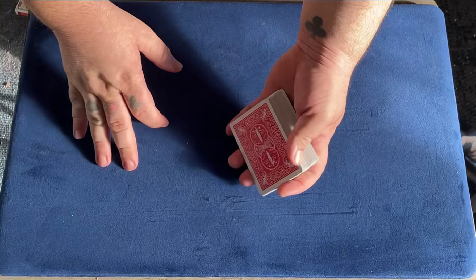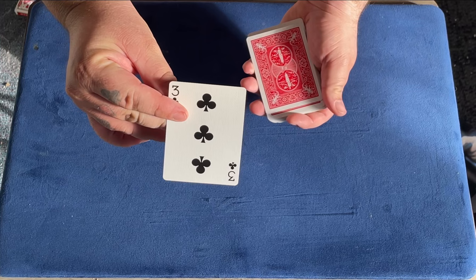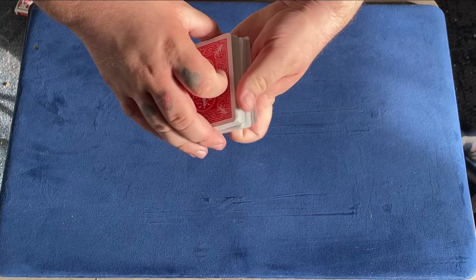Okay, so the spectator is going to select a card. It can truly be any card they want. Let's say they want this one right here. I won't even see it. I'll let you see it right there. Perfect. We're going to take that card and lose it into the pack, just like that.